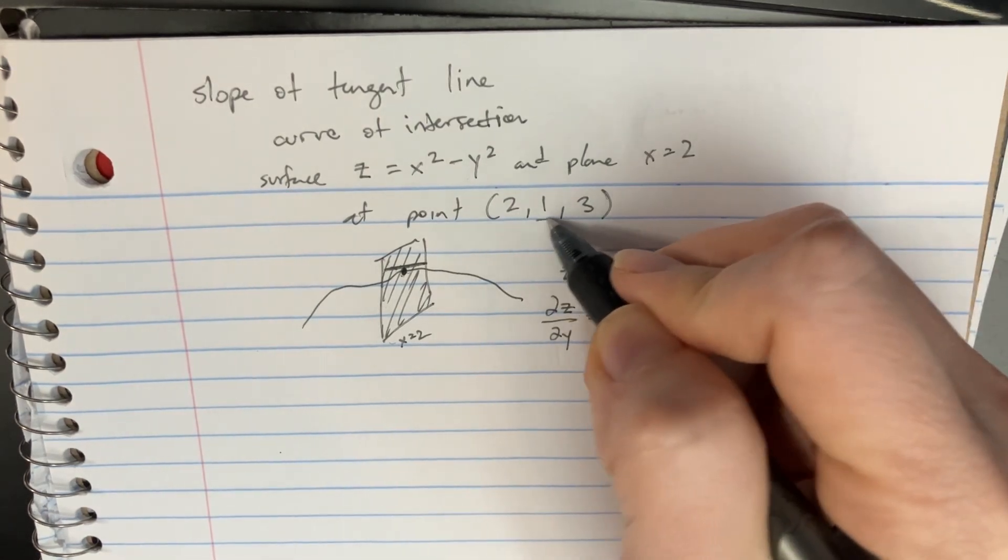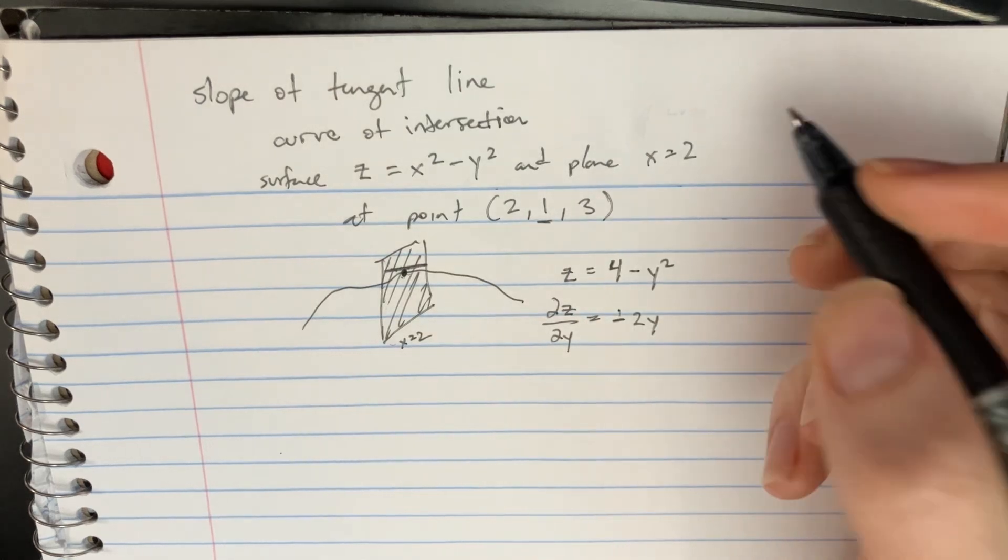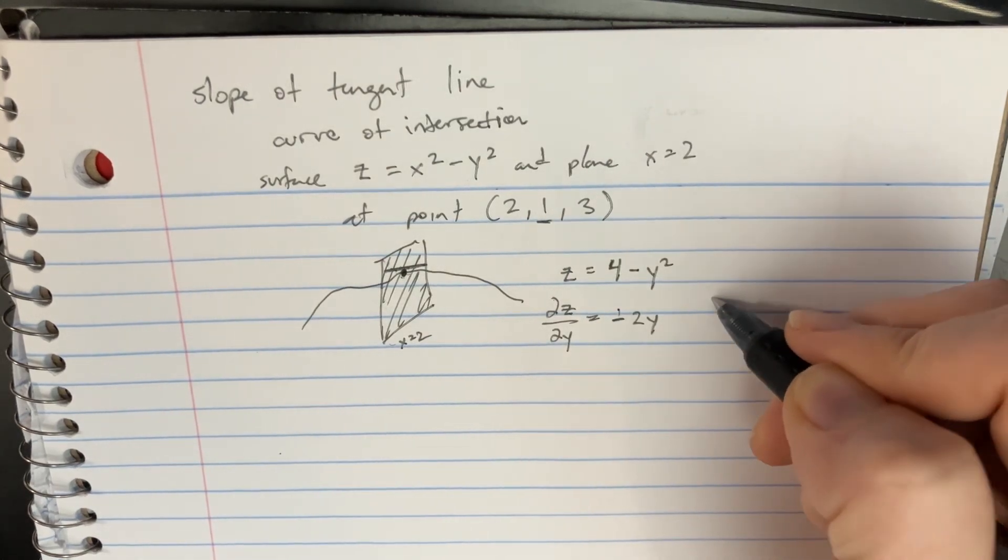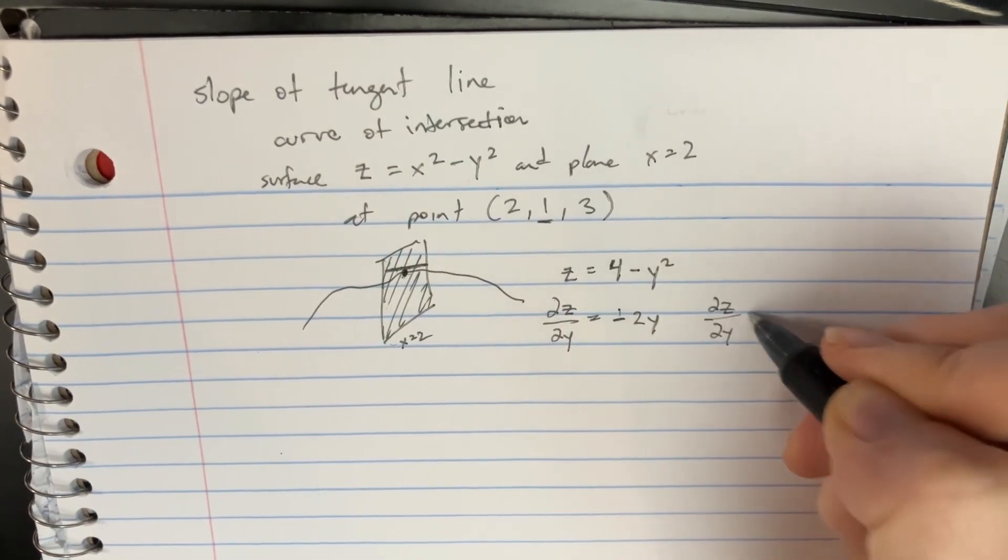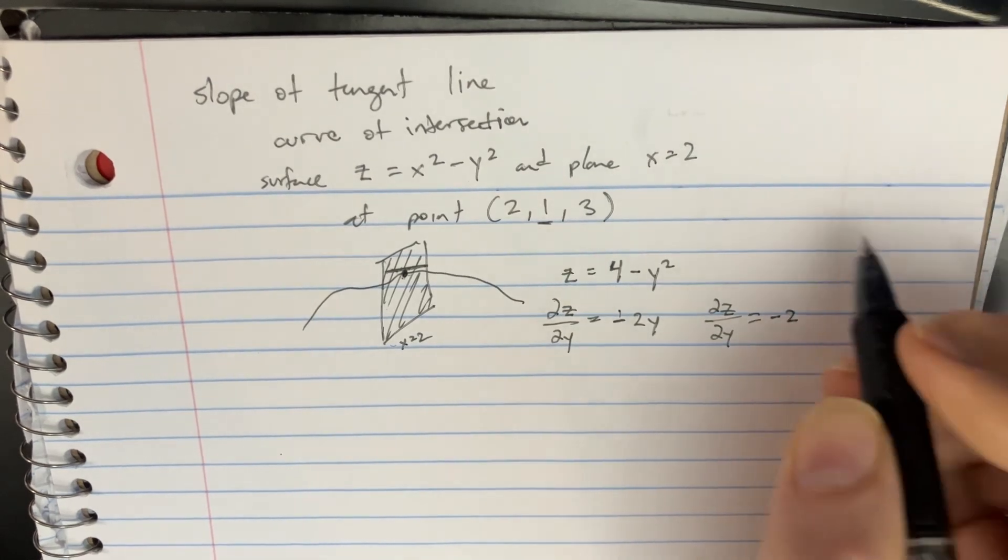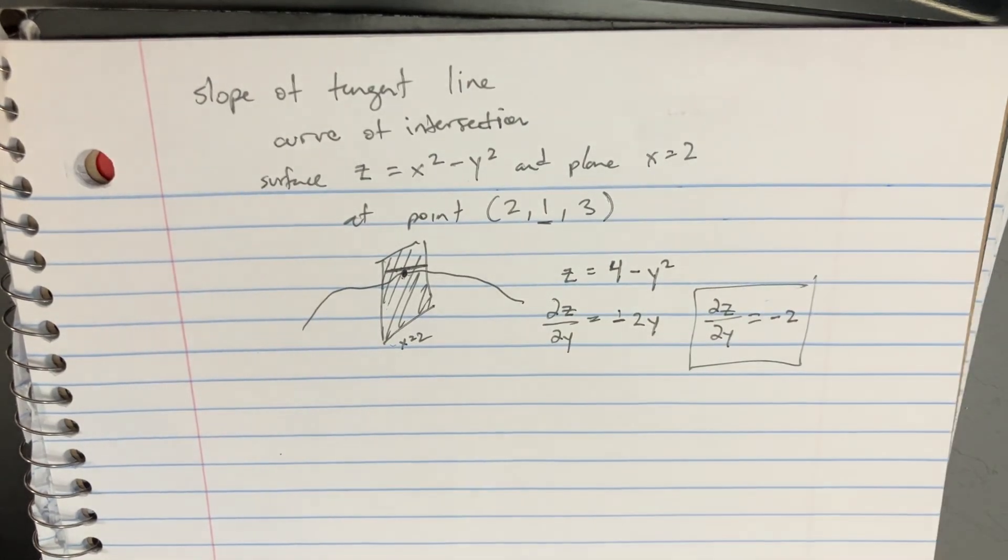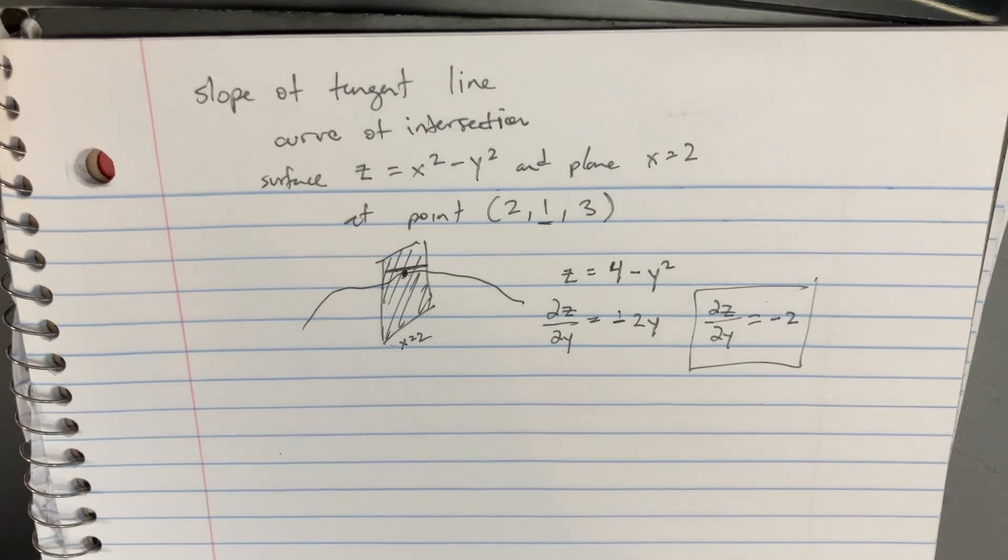And then we're looking at the point 2, 1, 3. The y point is 1. So we plug it in, and we get dz over dy is negative 2. And that is going to be the slope of the tangent line, the curve intersection. Pretty easy.